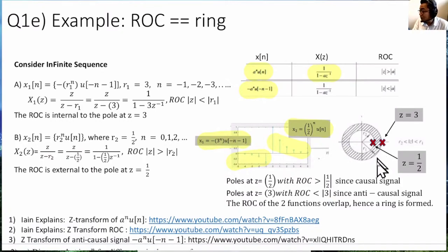When R2 is less than R1, the overlap occurs, and the region of convergence is an annular ring. That's the answer. Thank you.